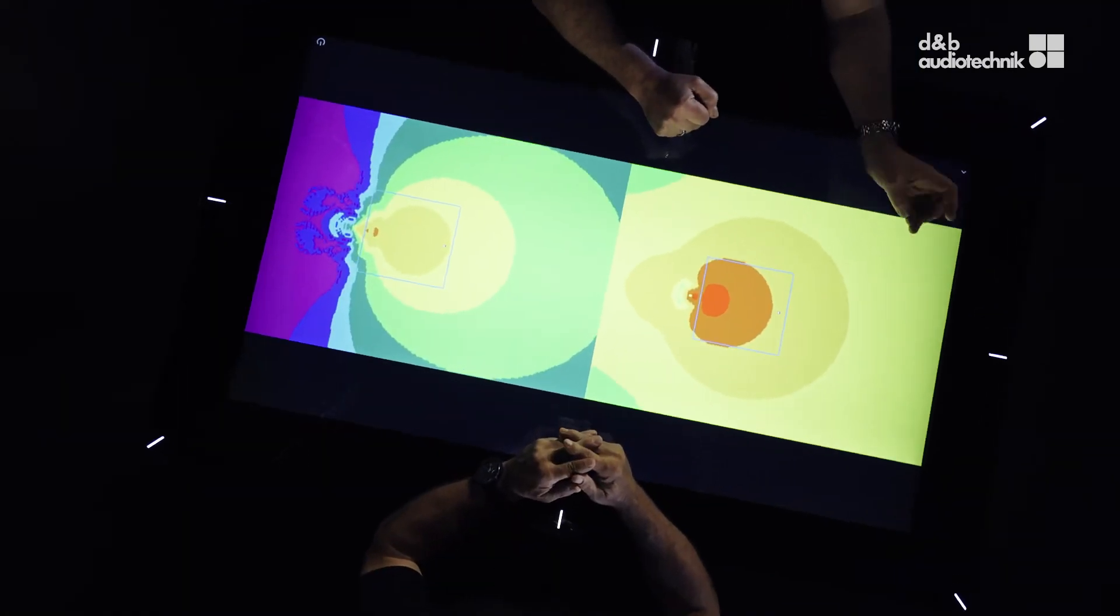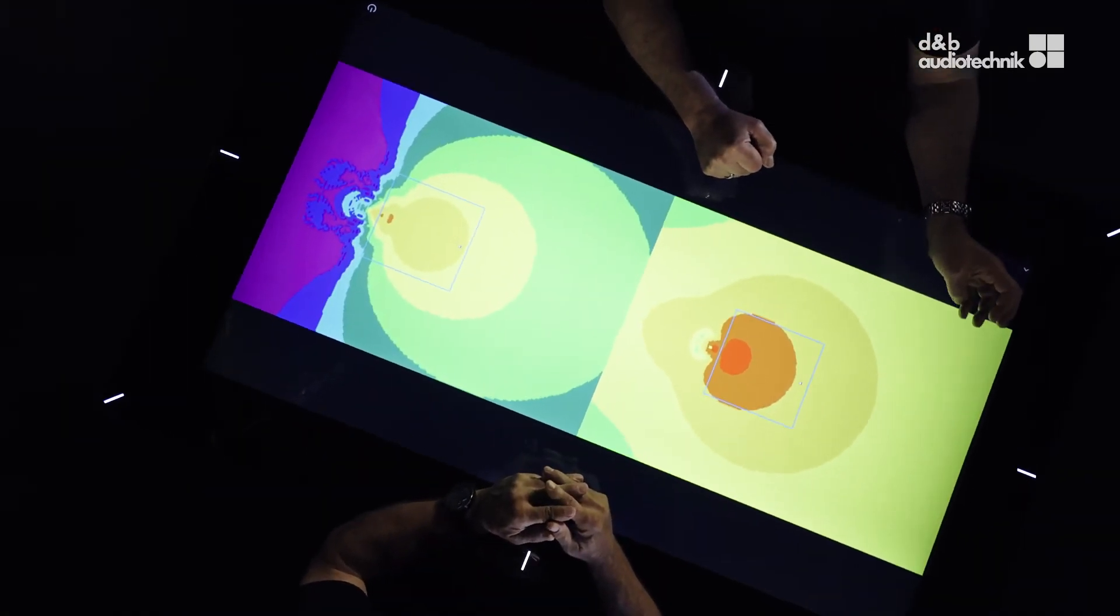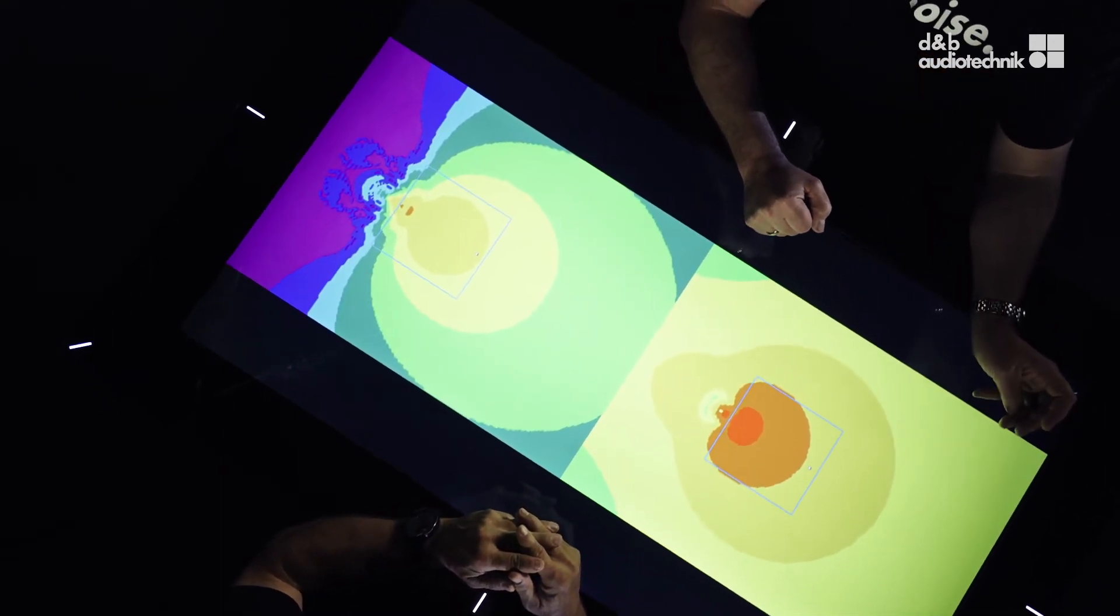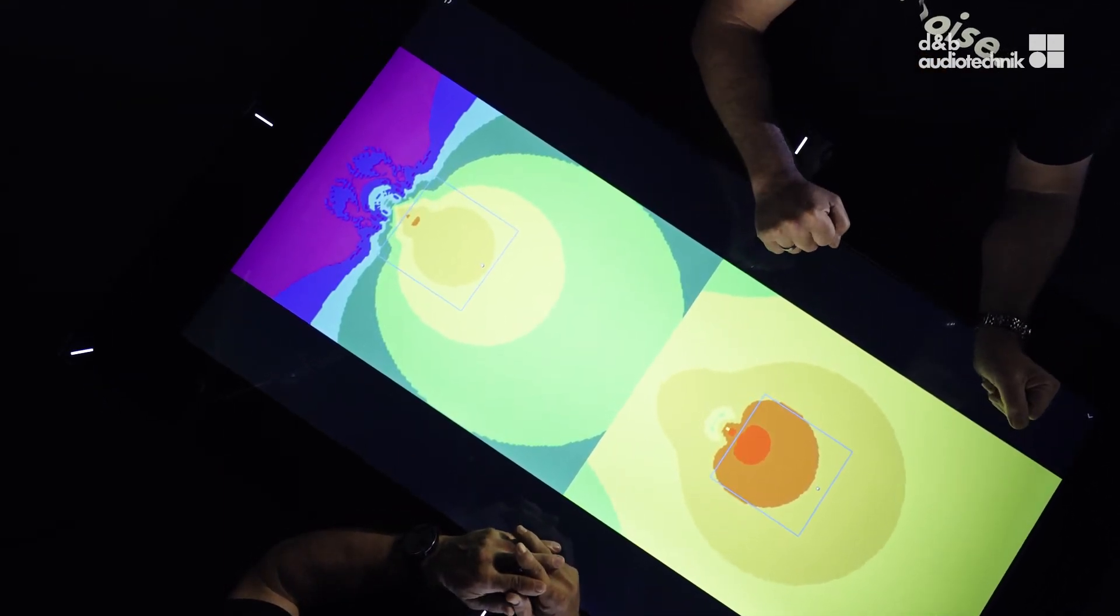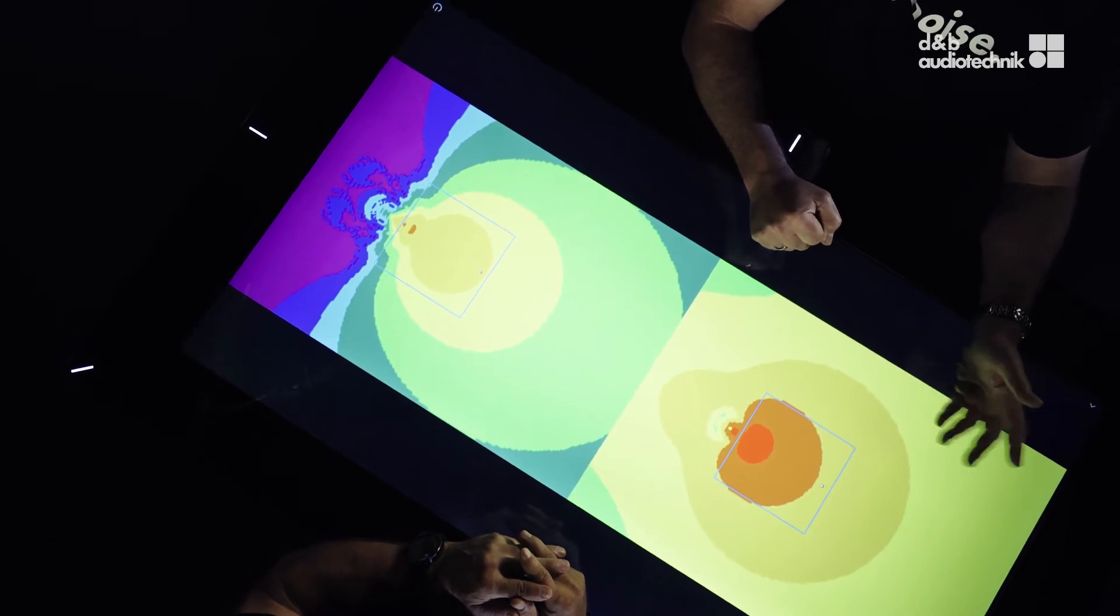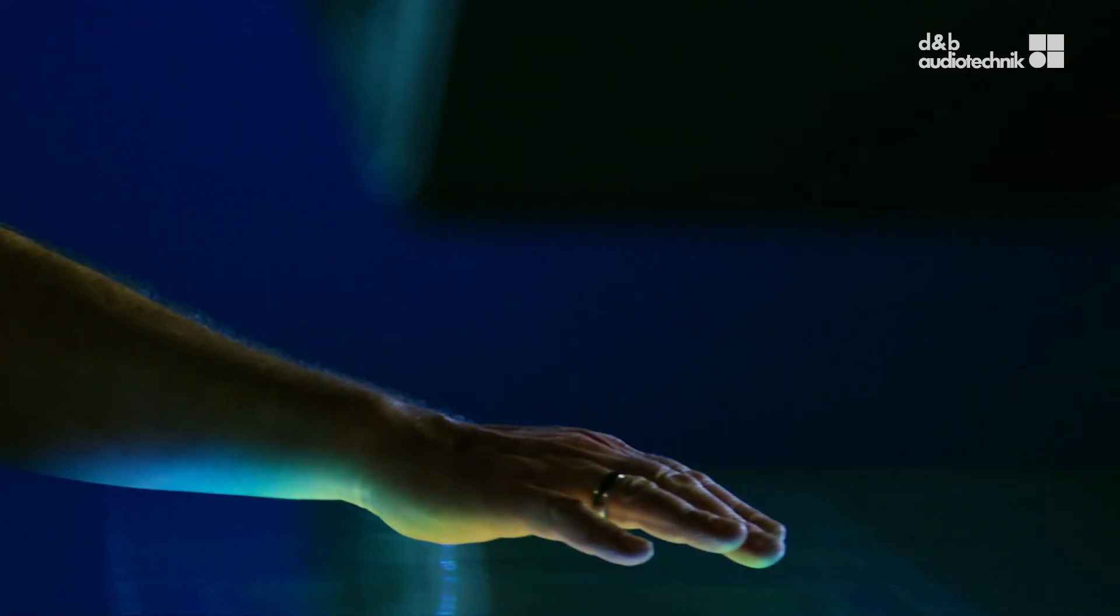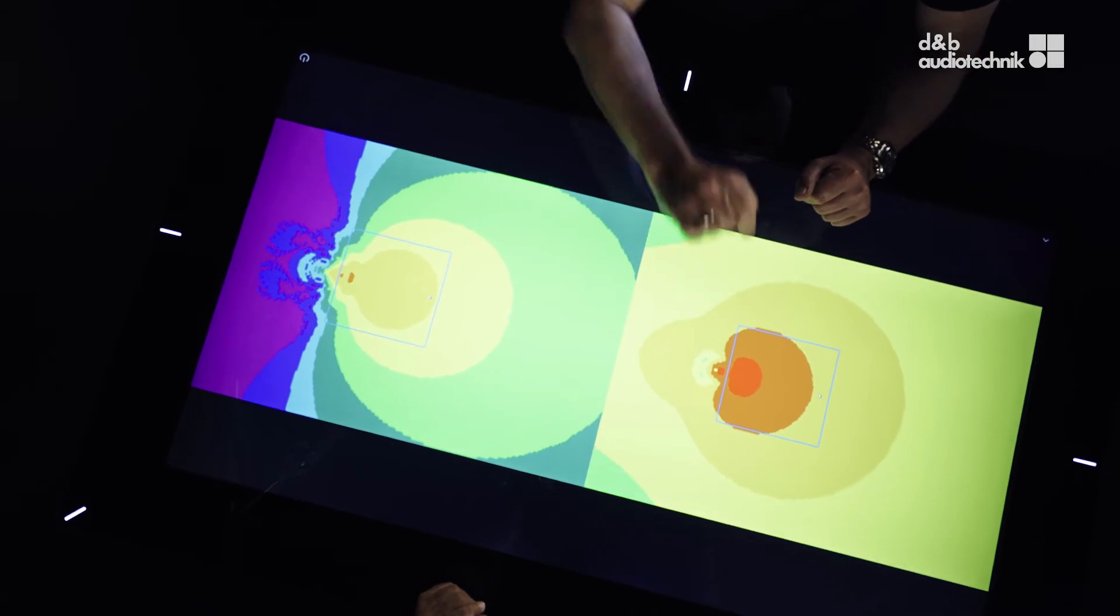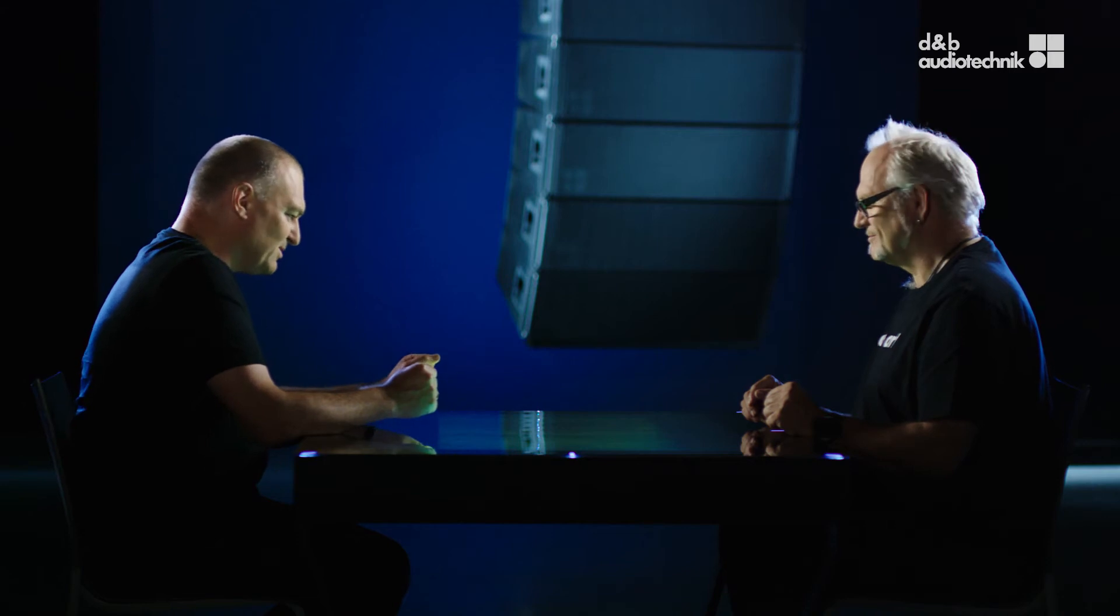If we turn to the other picture this one here, this represents the same array in the frequency range below this magic 300 hertz transition area. We have some emission to the front where we want to have it, where the audience is located, but we have nearly the same amount of energy towards the rear, which means a lot of noise where we don't want to have some noise.